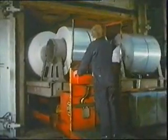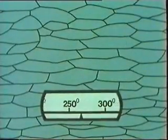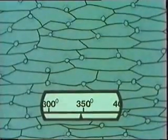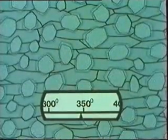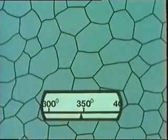After cold working a metal it's usually heated to a sufficiently high temperature. Let's see what effect heating has on the distorted grain structure. In the case of this particular metal nothing happens until the temperature reaches about 350 degrees centigrade. Now at the grain boundaries new grains begin to form and these grow rapidly until a new undistorted grain structure completely replaces the old distorted one. We call this process recrystallization.